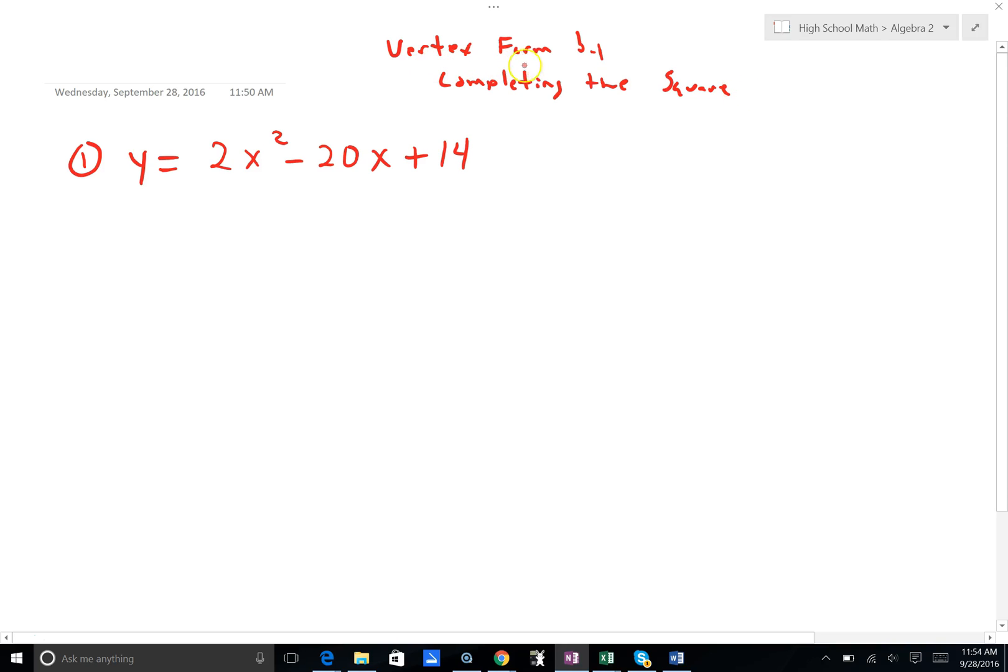In this video, we will be achieving vertex form by completing the square. Our first step will be to group our x terms inside a parenthesis, factoring out our coefficient of our x squared, factoring out our a term, and group the constant outside the parenthesis.